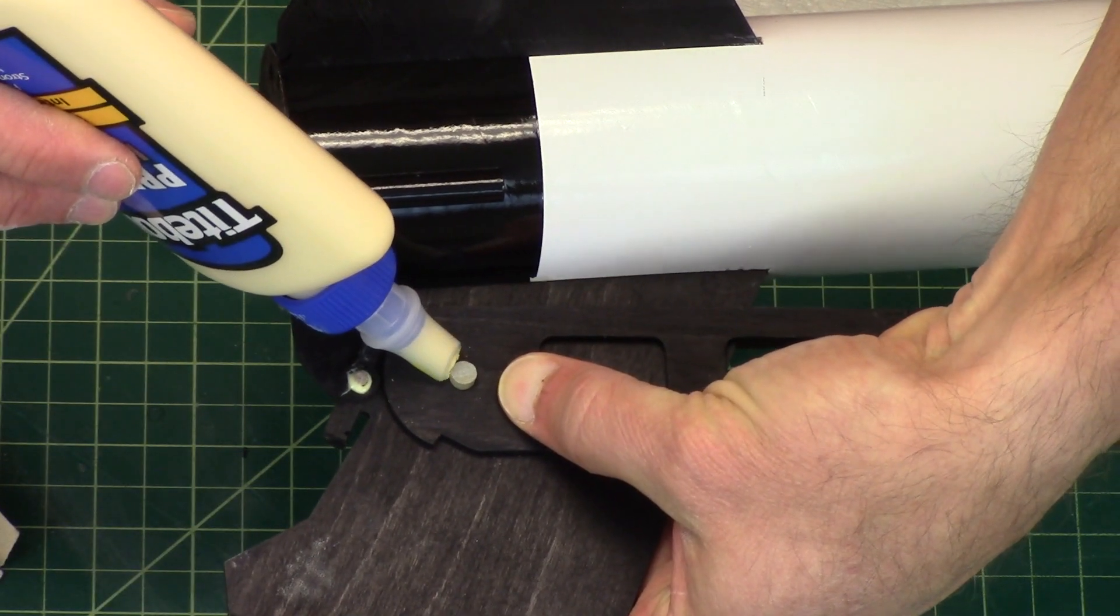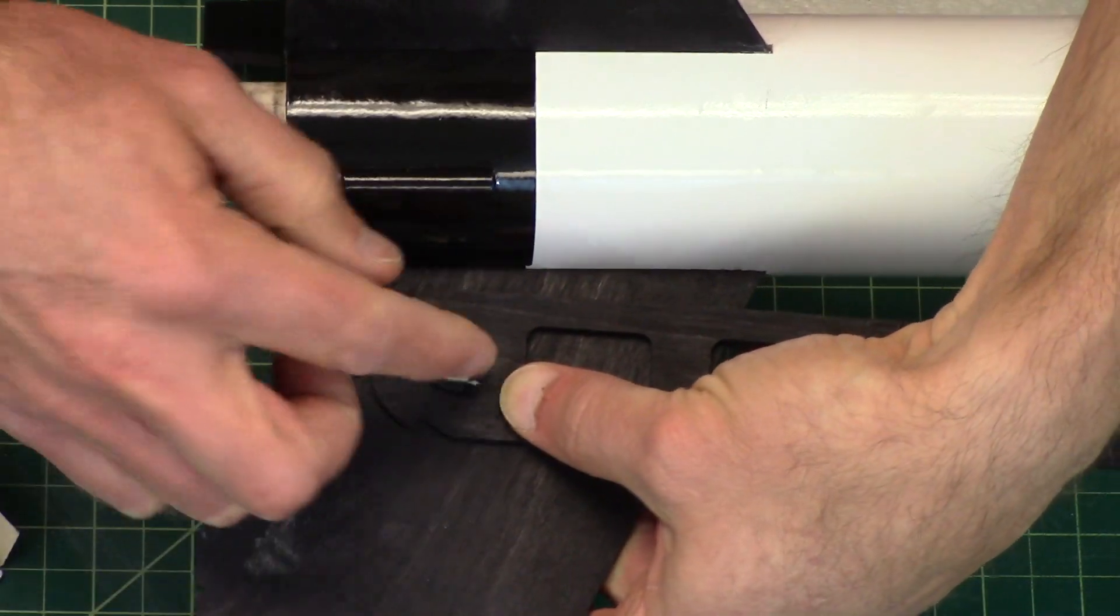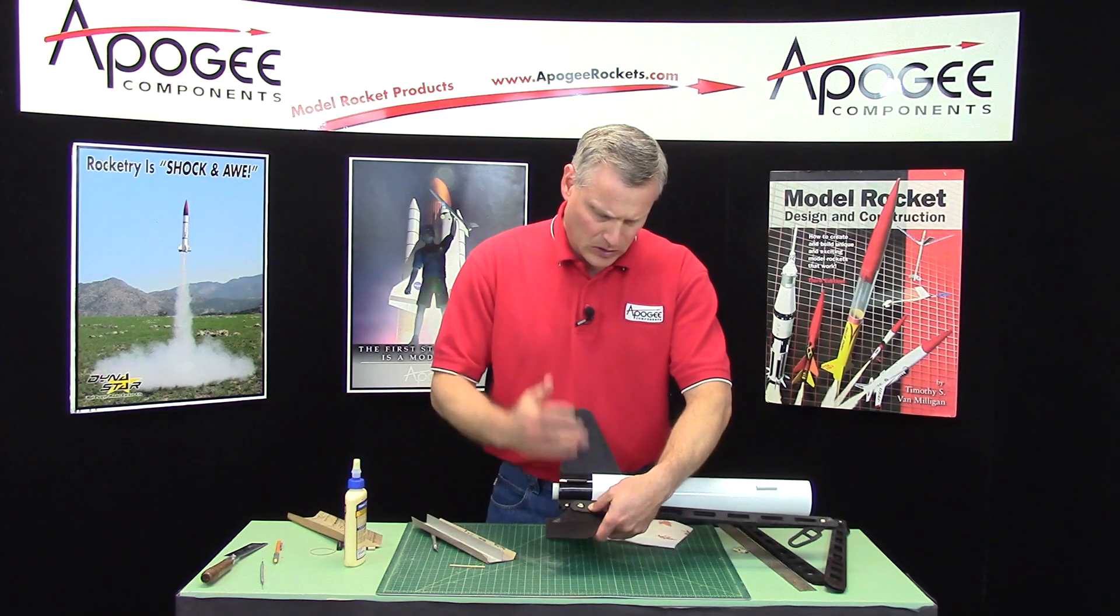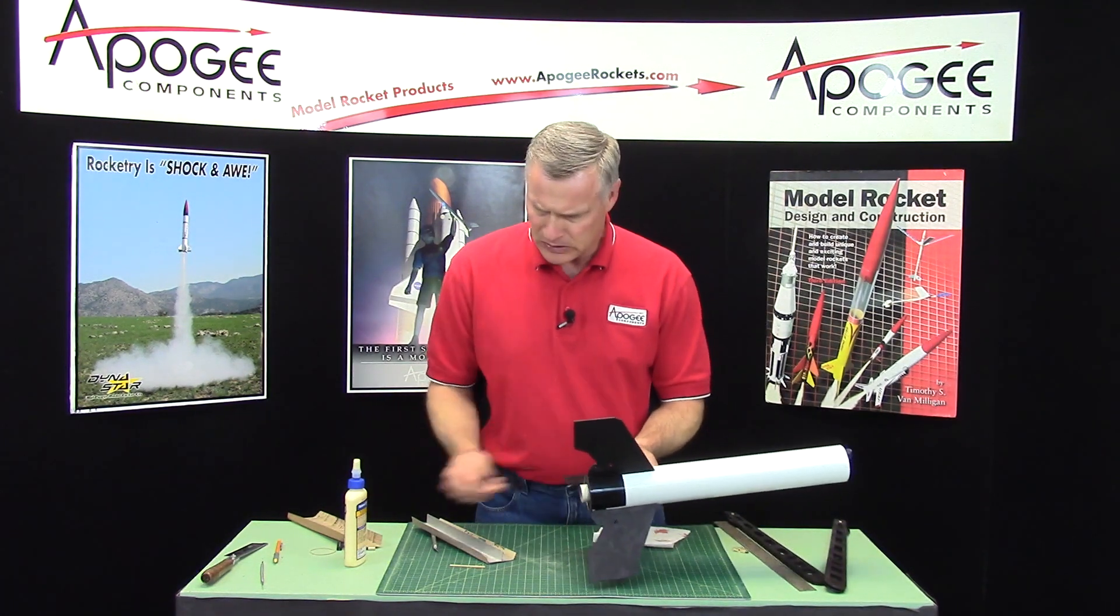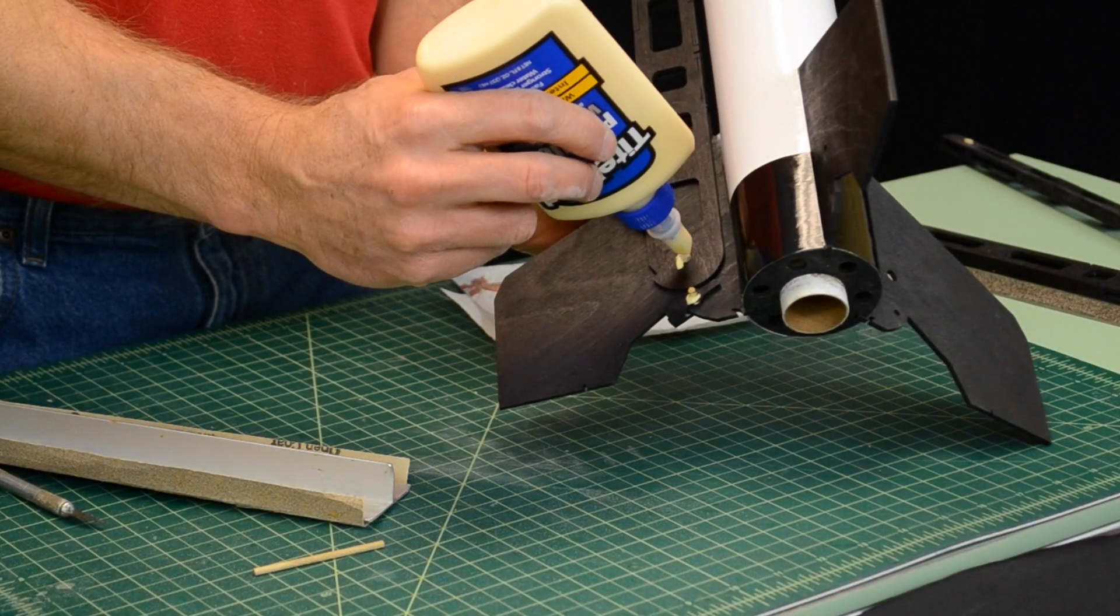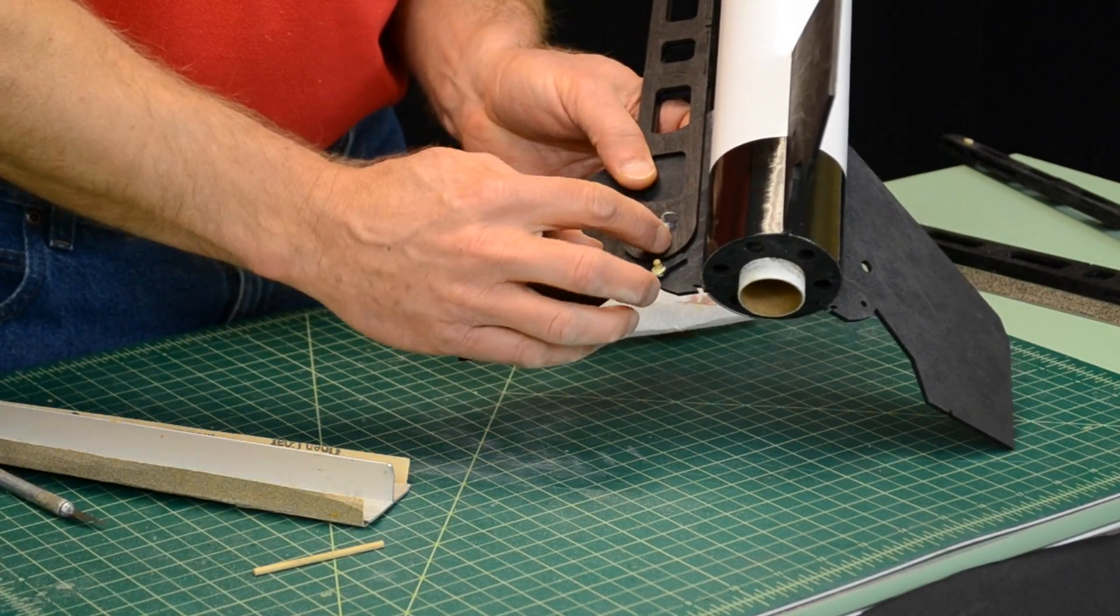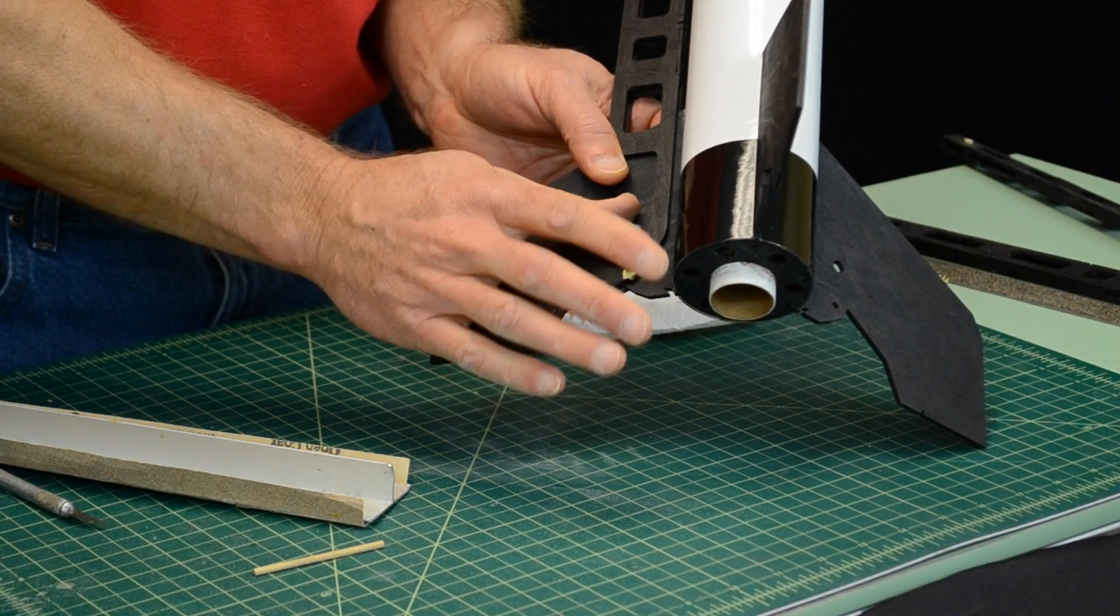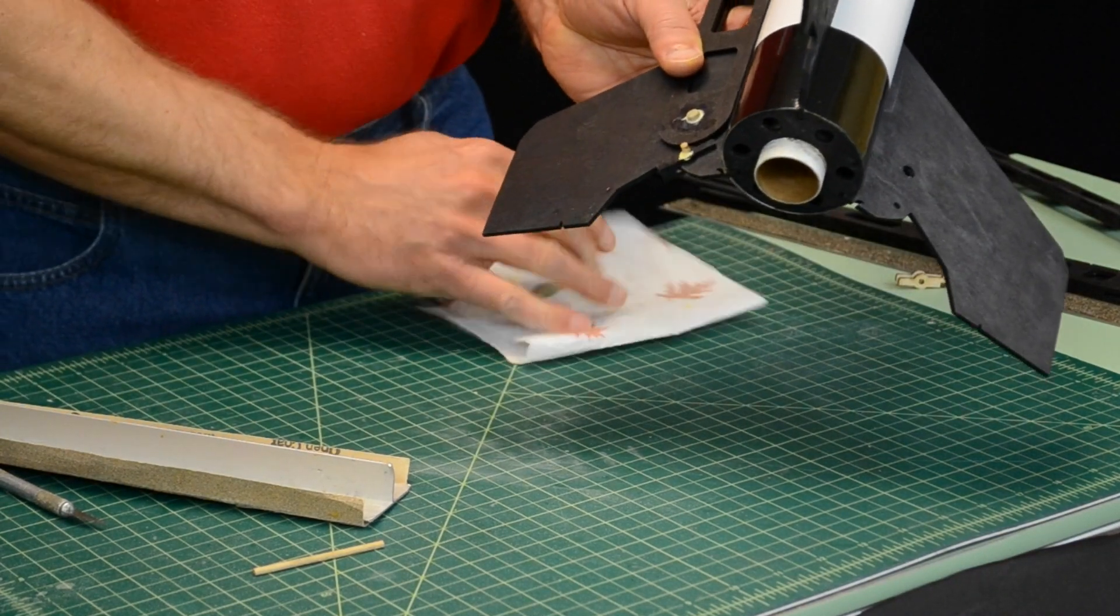And then we're going to put a fillet of glue around it. We're going to do both sides.